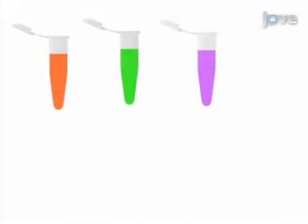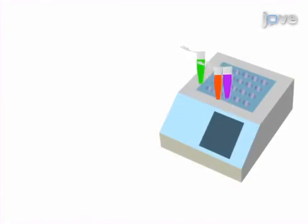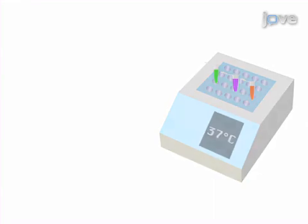This is accomplished by first preparing the reagents, including a photo initiator, buffers, triethanolamine, and PEG diacrylate solution, and warming them to 37 degrees Celsius.